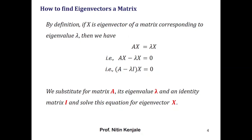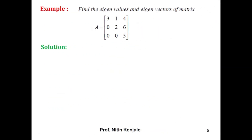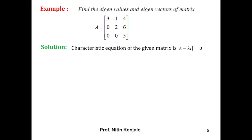Now let us see an example. We are given a matrix A and asked to find its eigenvalues and eigenvectors. First, we find the eigenvalues by solving the characteristic equation, given by det(A − λI) = 0. Using the method shown in my previous video, after solving the characteristic equation we get the eigenvalues: λ = 2, 3, and 5.